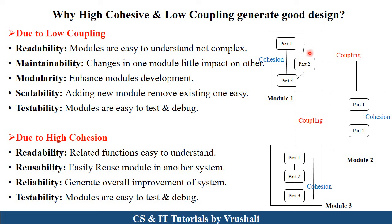With high cohesion, where all internal classes within a module are interrelated, the advantages are: readability — related functions are easy to understand due to their interrelationship; reusability — you can easily reuse a module in another system; reliability — overall system improvement through low coupling and high cohesion; and testability — modules are easy to test and debug. That is why high cohesion and low coupling generates a good design.